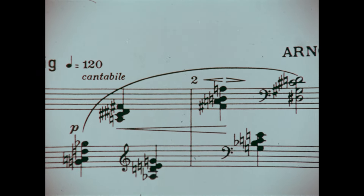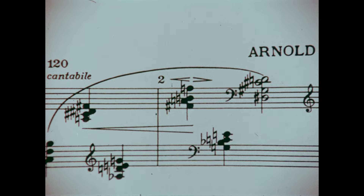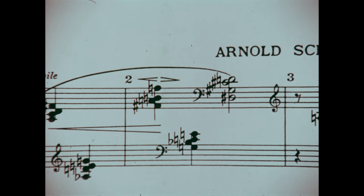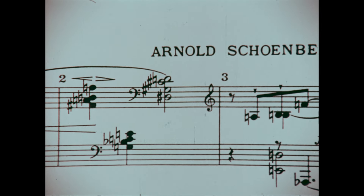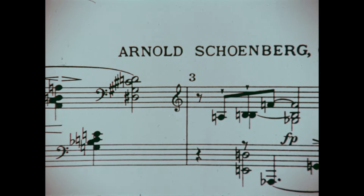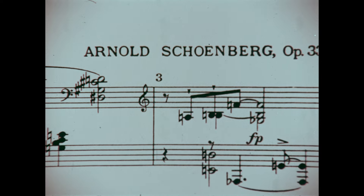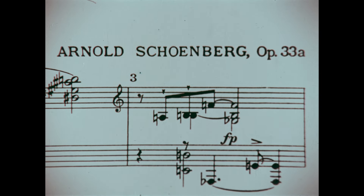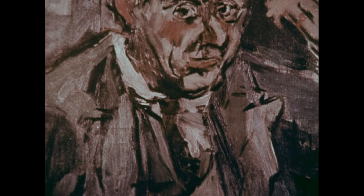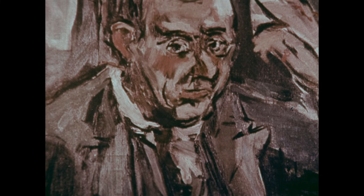Outra maneira de utilizar os 12 sons foi proposta pelo austríaco Arnold Schoenberg. Segundo uma teoria desse compositor, todos os 12 sons deveriam ser colocados numa ordem diferente para cada obra. O sistema de Schoenberg foi por isso mesmo chamado sistema dodecafônico.